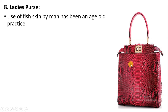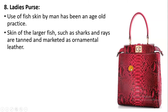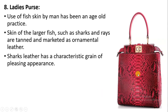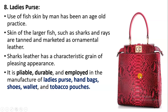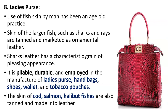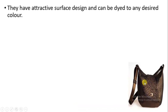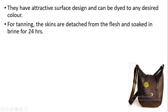Ladies purses are also produced from fish skin. Since old times, the skin of large fishes like sharks and rays has been removed and tanned, then marketed as ornamental leather. Shark leather has a very beautiful pleasing appearance and design. These purses are pliable, flexible, and durable, able to withstand pressure. They are used to manufacture ladies' purses, handbags, shoes, wallets, and tobacco pouches. Fishes like cod, salmon, and halibut also have their skin removed, tanned, and made into leather. The fish skin can also be dyed in any desired color.